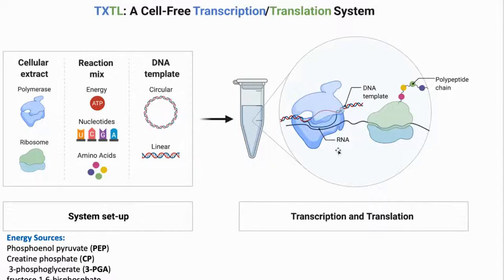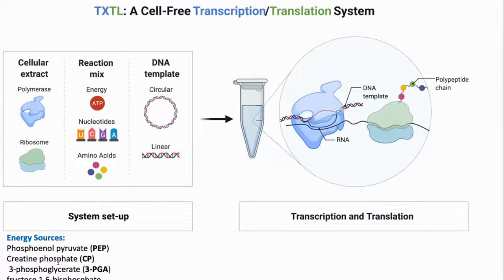Cell-free is basically a transcription-translation system which has these components — the cellular extracts, which contain the polymerases, ribosomes, a mixture of nucleotides, energy, amino acids, and DNA template with a gene of interest. One of the main reasons why it's expensive is because of the energy source — particularly PEP and creatine phosphate are among the most expensive, which is a problem.